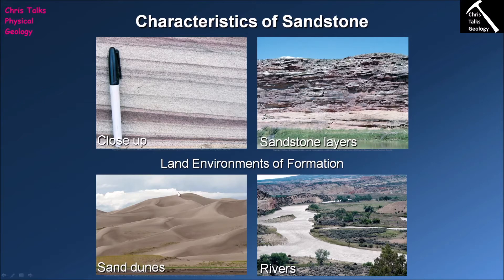We're also going to look for features such as cross-beds, because of course we're dealing with dunes here and we would expect cross-beds to form as part of the sedimentary depositional process. We would also keep our eyes out for other features, especially fossils — because it's a desert environment, there's a reasonable chance we may find reptile fossils mixed in with the sediment, and that's going to be quite helpful in working out the exact environment of deposition.